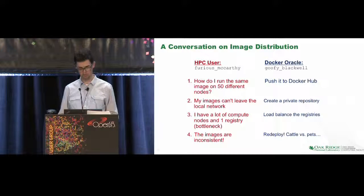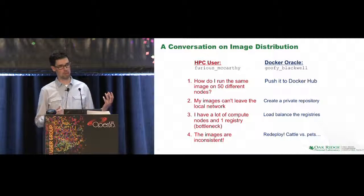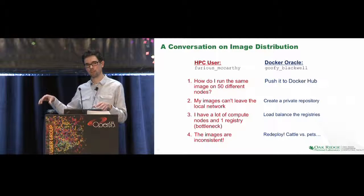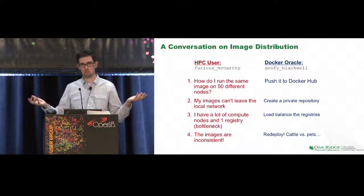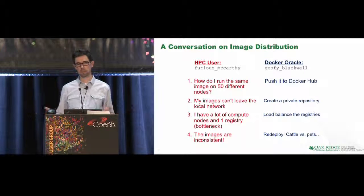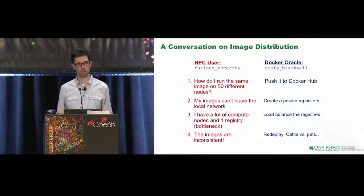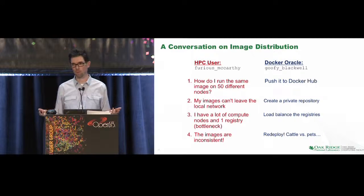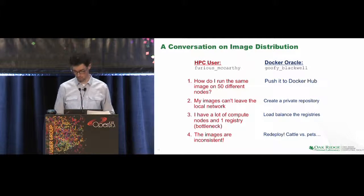Finally, images become inconsistent. As a user on a compute node makes some changes, pushes that to the Docker registry, and pulls it from another node — but the 50th node doesn't get that image pulled — now you have different images across the cluster. The Docker Oracle would say, just redeploy; treat your nodes as if they were cattle, not pets. We've heard this before. It's not a satisfactory answer to how Docker can help HPC applications.